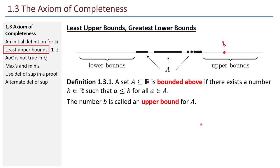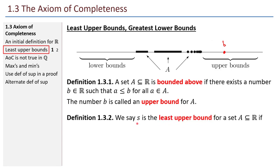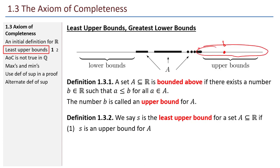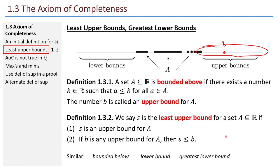B can actually equal one of those elements of A. If there is some element of A that is the biggest element in A, then B could be an element of A, but it doesn't have to be. We say that S is the least upper bound for a set A if two things hold: first, S is an upper bound; and second, if B is any upper bound for A, then S is less than or equal to B. So S is the least of all upper bounds. There are similar definitions for bounded below, lower bound, and greatest lower bound — those ideas are analogous.